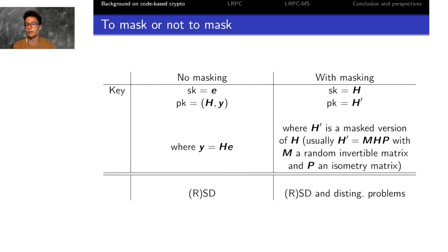If you design your cryptosystem like this, you will have to assume the difficulty of a distinguishing problem between the public key H' and a random parity check matrix, on top of your syndrome decoding problem which appears when you send the ciphertext. So if you do masking, you have an additional distinguishing problem in your security reduction.